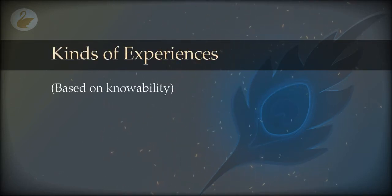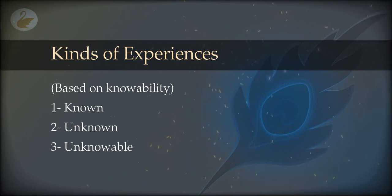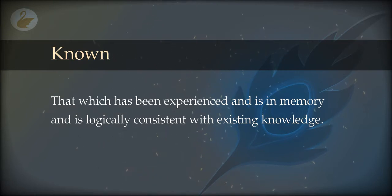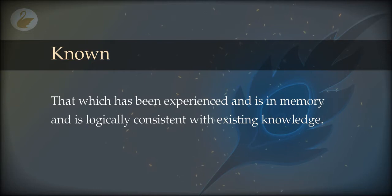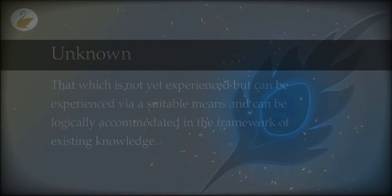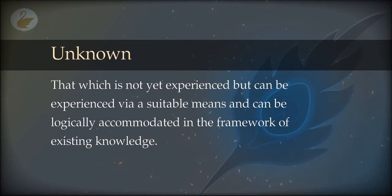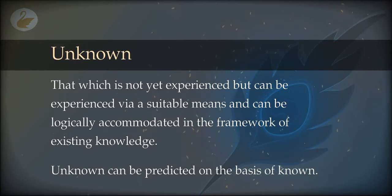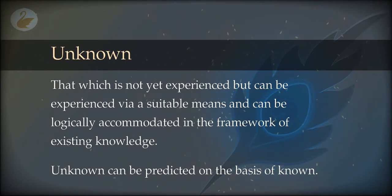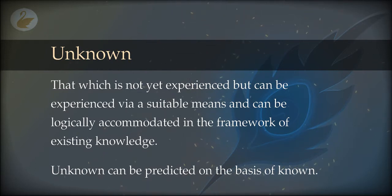Based on knowability, experiences can be divided into three kinds: the known, the unknown, and the unknowable. The known is that which is already experienced, already in the memory, with relations formed that are logically consistent with existing knowledge. The unknown is that which is not yet experienced but can be experienced via suitable means. On the basis of the known, we can predict the unknown and find an experience to fill the hole in knowledge.